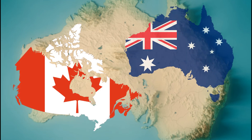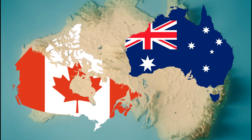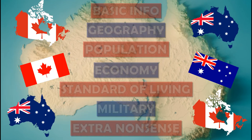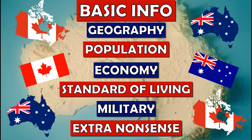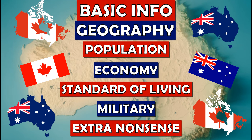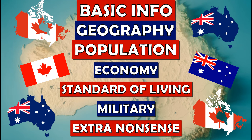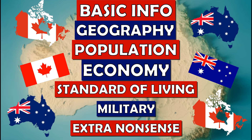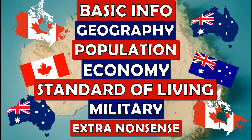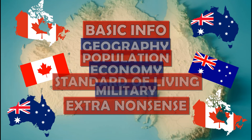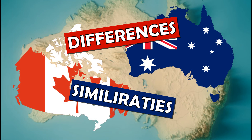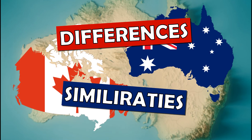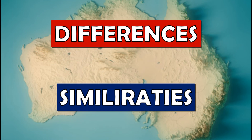Let's compare Canada to Australia. In this video we'll be comparing these nations in seven categories including basic information, geography, population, economy, the standard of living, military, and extra nonsense. We'll be looking at differences and similarities since they are much like each other.